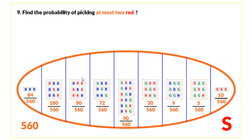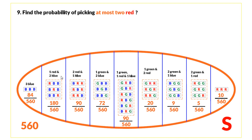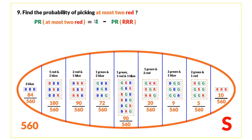Question nine: find the probability of picking at most two reds. We could pick two reds, one red, or no reds. Instead of summing all of these, we note that picking three reds is the complement of 'at most two reds.' So we compute 1 minus the probability of three reds, which equals 0.98.